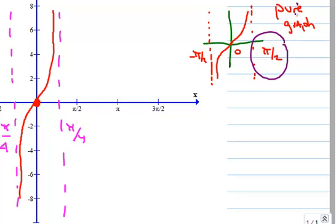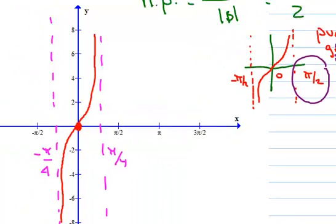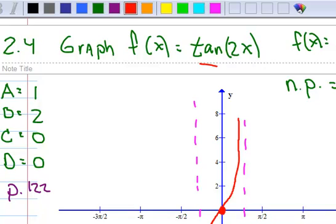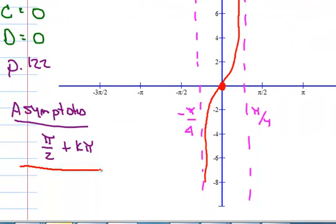What you do is you take that and divide that by the absolute value of B. So now you're going to have asymptotes at π over 4, right? π over 2 divided by 2 is π over 4, plus every k times π over 2.